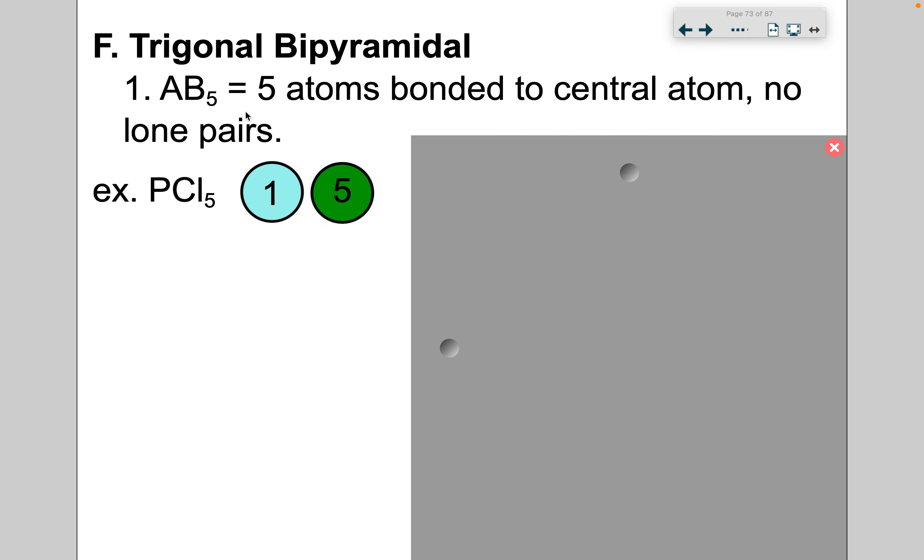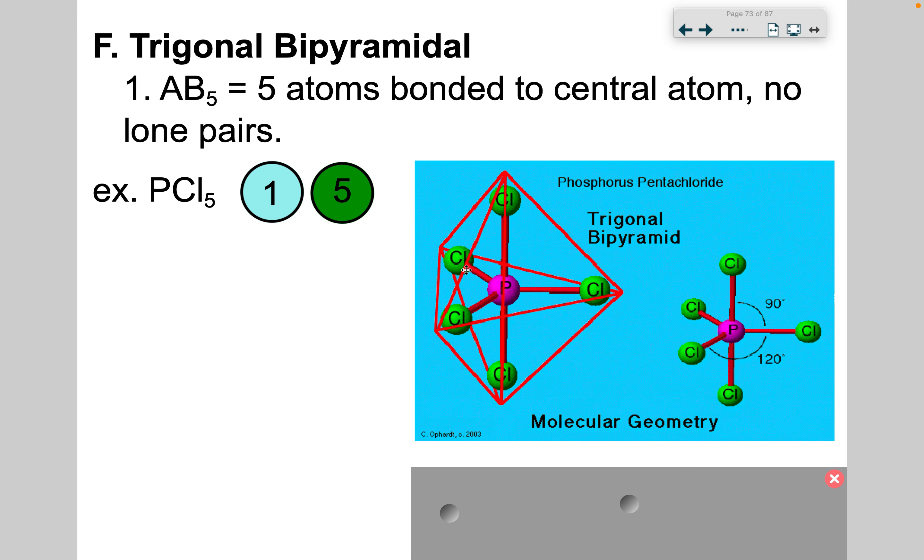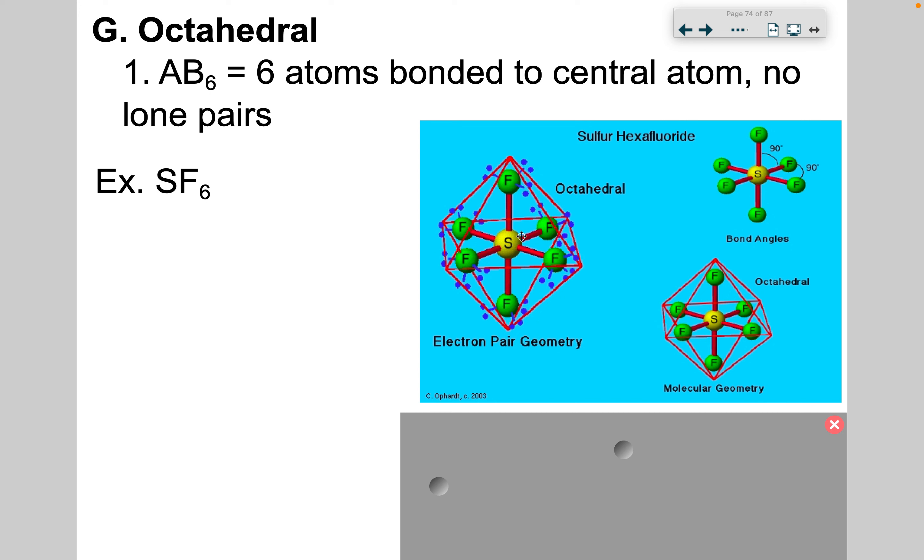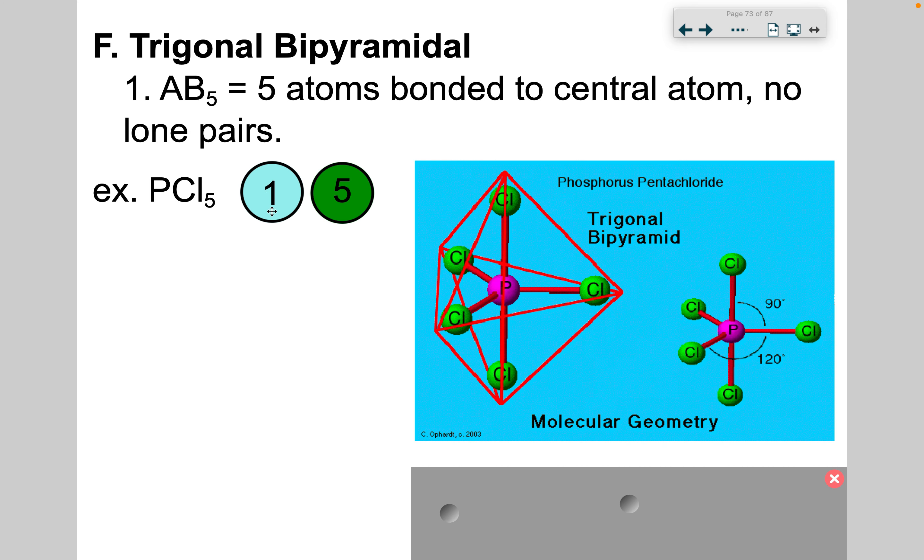Trigonal bipyramidal, AB5. This is part of our extended octet, where you have five atoms bonded to the central, and there are no lone pairs. And you can see we have this kind of trigonal planar here, and then a top and a bottom. And then finally, the octahedral, again, a part of the extended octet, AB6. So six atoms bonded to central. There's no lone pairs, and this time we have four coming out at 90 degrees, and then one at the top, one at the bottom, again, 90 degrees. Now we can't make this with the ball and stick, and there is one ball, but there's very few of them out there, where we can make the trigonal bipyramidal.